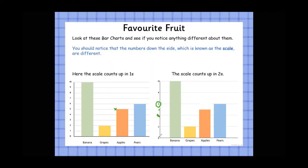Sometimes we have scales going up in threes, fours, fives, or even tens, depending on the total number of votes. If we had 100 children in the class and 90 of them chose bananas, going up in ones or twos would take a very long time and produce a very large bar chart. So we use bigger gaps or increments to make the bar chart a more manageable size.